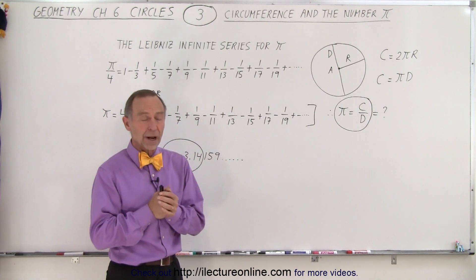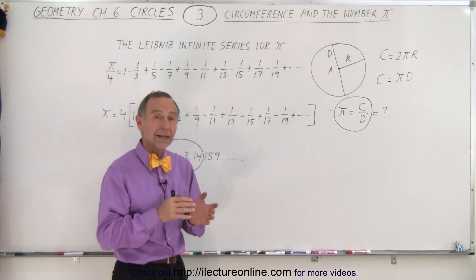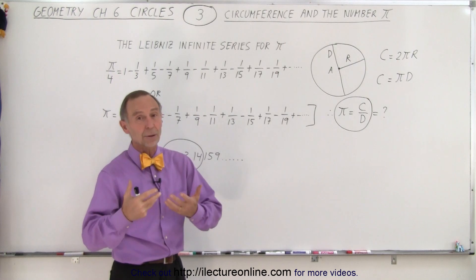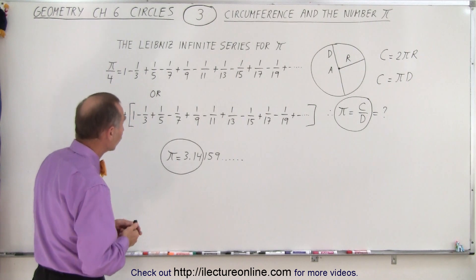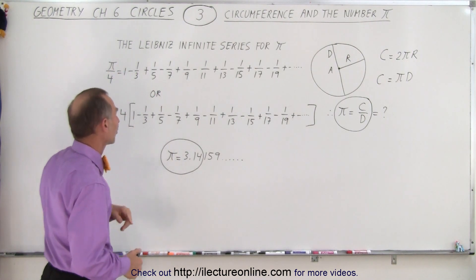How do we figure that number out? We can do it experimentally, but we can also do it mathematically. A number of individuals in the past figured out how to calculate the number π to a very accurate result, to many decimal places. One of the ways it was done is called the Leibniz infinite series for π.